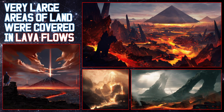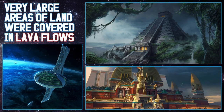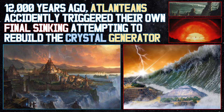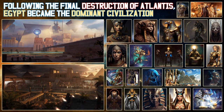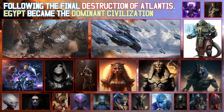A few thousand Atlanteans escaped in airships, landing in Central and South America and Egypt. 12,000 years ago, Atlanteans accidentally triggered their own final sinking attempting to rebuild the crystal generator. Following the final destruction of Atlantis, Egypt became the dominant civilisation. Sirians with technology, psychic ability and inflated egos arrived and became the gods and gurus of the ancient world. They were joined by Orions and Dracos who were interested in enslaving Earth populations. Sirians withdrew from influencing Earth's cultural and political affairs in the Middle Ages.